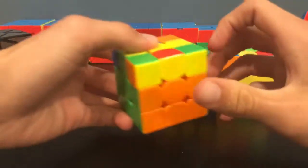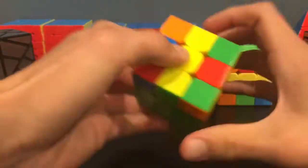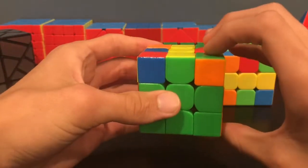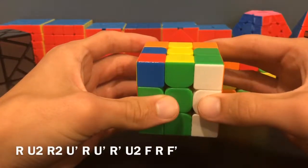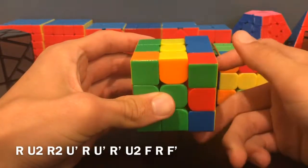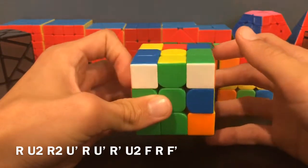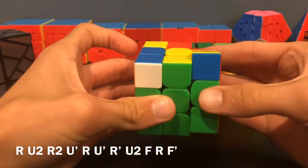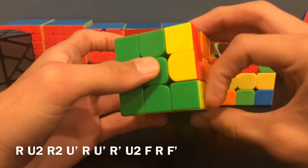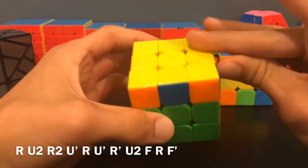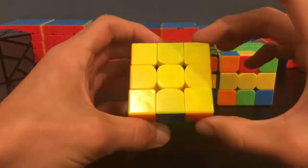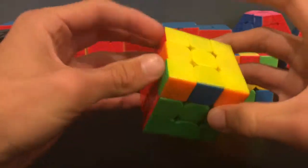This case has two blocks of three. We'll hold this vertically and then do this algorithm: R U2 R2 U' R U' R' U2 F R F'. That was sort of similar to when you have corners facing out here.